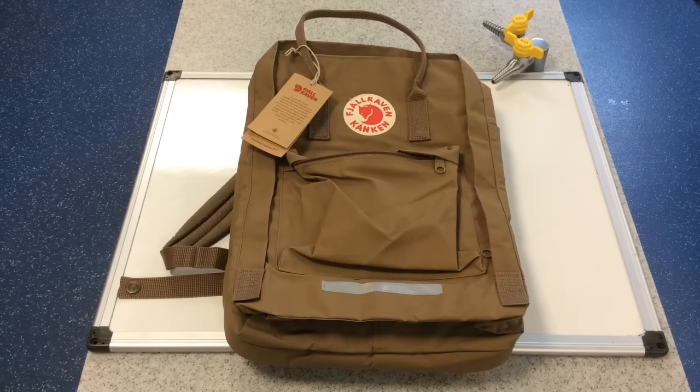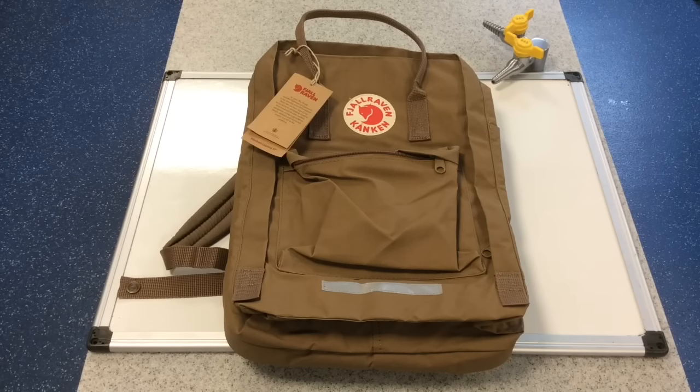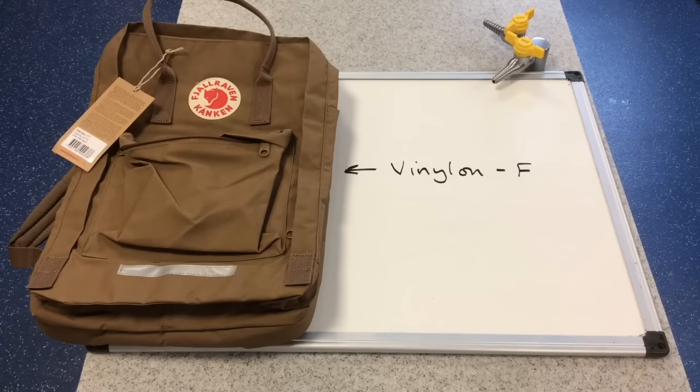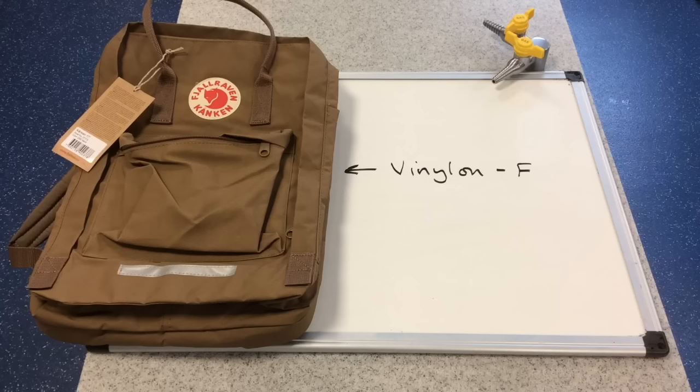I thought I'd make a quick video about the polymer used to make the Fjallraven Kanken bag. So the material used to make the bag is known as Vinylon F,